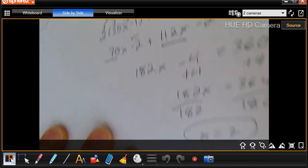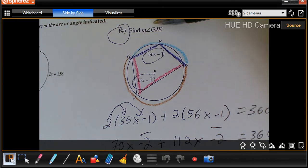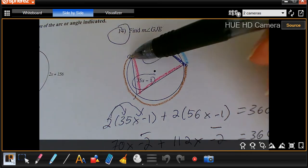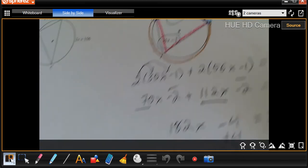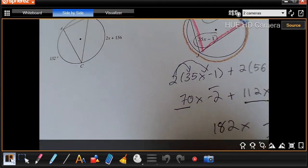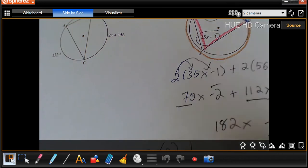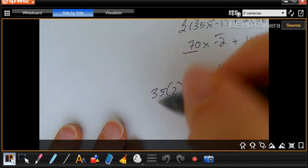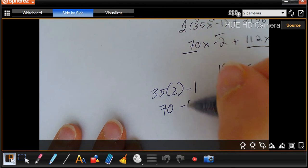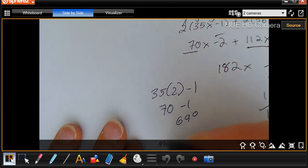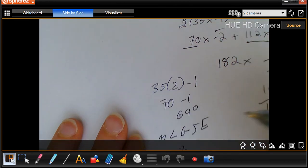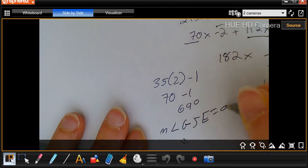Now it did not ask what X was. It asked what angle GJE was. So I'm going to have to plug that back in. I'm going to have to go 35 times 2 minus 1. 35 times 2 is 70. 70 minus 1 is 69 degrees. So the measure of angle GJE equals 69 degrees.